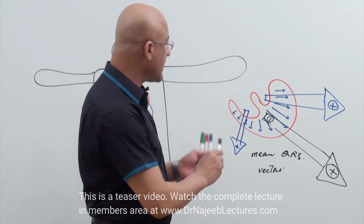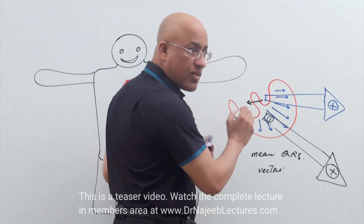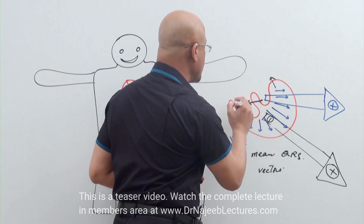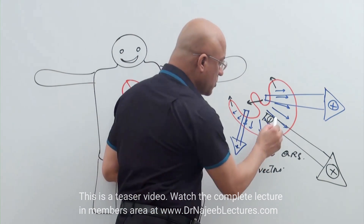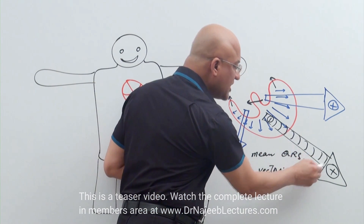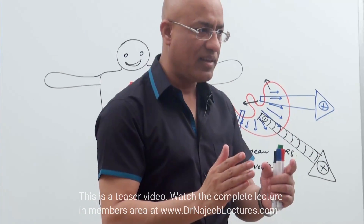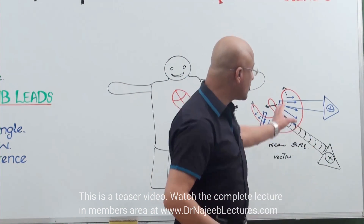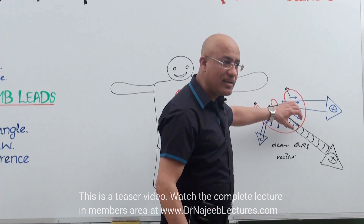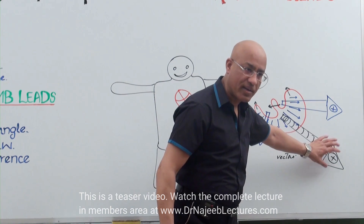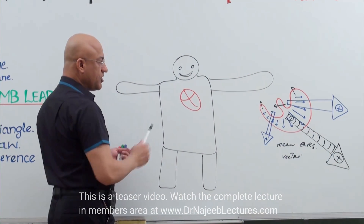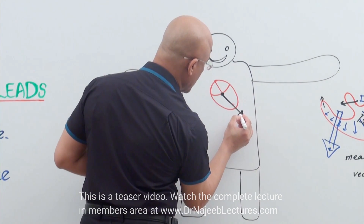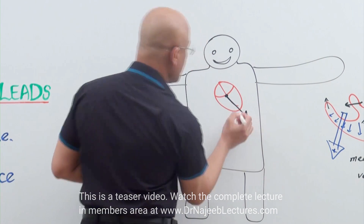In previous lectures I mentioned that initially there is septal depolarization which is rightward, then major ventricular depolarization which is leftward and downward, and then basal depolarization which is upward. But this mean vector is the average of all those vectors at any moment. 'Mean vector' does not mean a cheap vector — it means that when millions of vectors are added together, we end up with the mean QRS vector. This vector represents major ventricular depolarization.